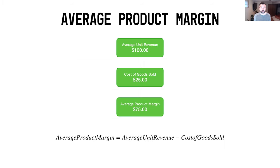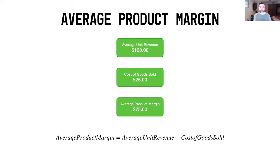Today we're going to talk about average product margin. As we discussed in day two around gross margin and gross profit, it's a very similar calculation. If you take your average unit revenue — the average price you sold the product at — and subtract your cost of goods sold, what you're left with is your average product margin. In this scenario: you sold the product for $100, it cost you $25 to produce, so $100 minus $25 leaves you with $75 average product margin.